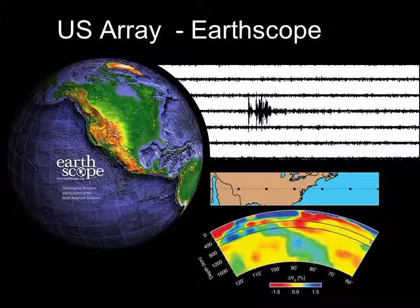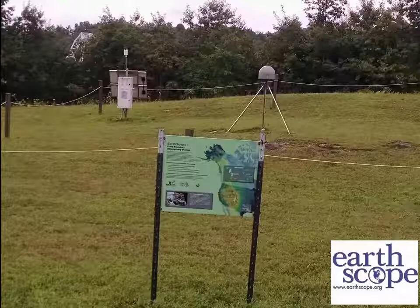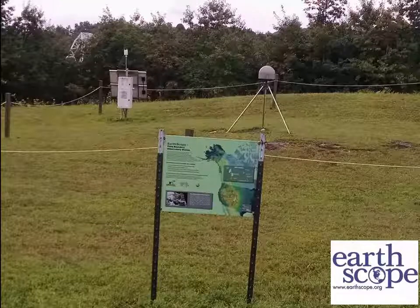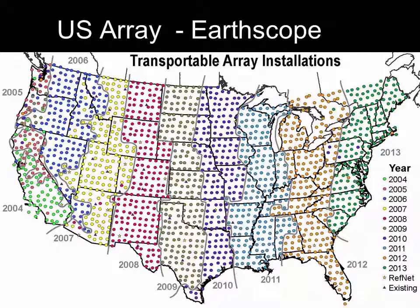Earthscope was an experiment to map and study the interior of the earth using seismic waves, or vibrations caused by earthquakes. This array used high precision seismic stations, such as this one located near Rosman, North Carolina. Since it was too costly to place seismometers across the country, plans were made for a transportable array that could be moved across the United States.